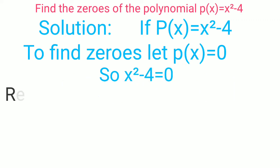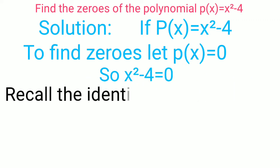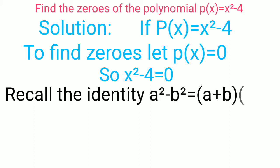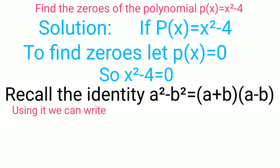So x square minus 4 is equal to 0. Recall the identity a square minus b square is equal to a plus b into a minus b. Using it, we can write x plus 2 into x minus 2 is equal to 0.